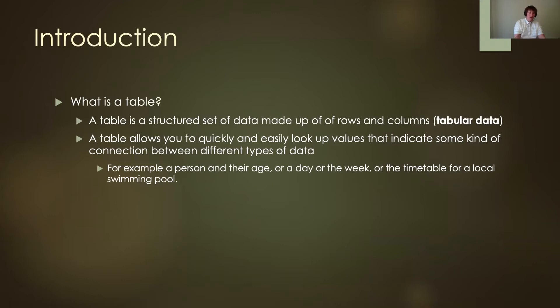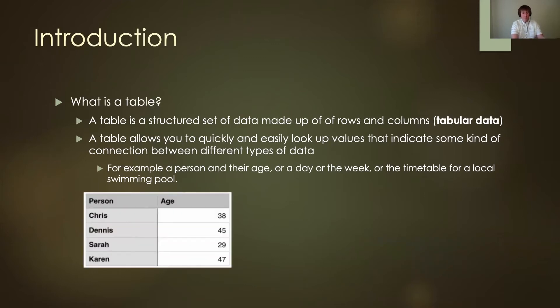For example, let's say I have a person and we want to know their age, or we have day of the week, or we have a timetable for the local swimming pool. What's the easiest way to display this type of data? Usually it's going to be a table. Here I have all the people on the left and I have their age. So Chris is 38, Dennis is 45, and I just go down the table and I can see very easily who's the person and what their age is.